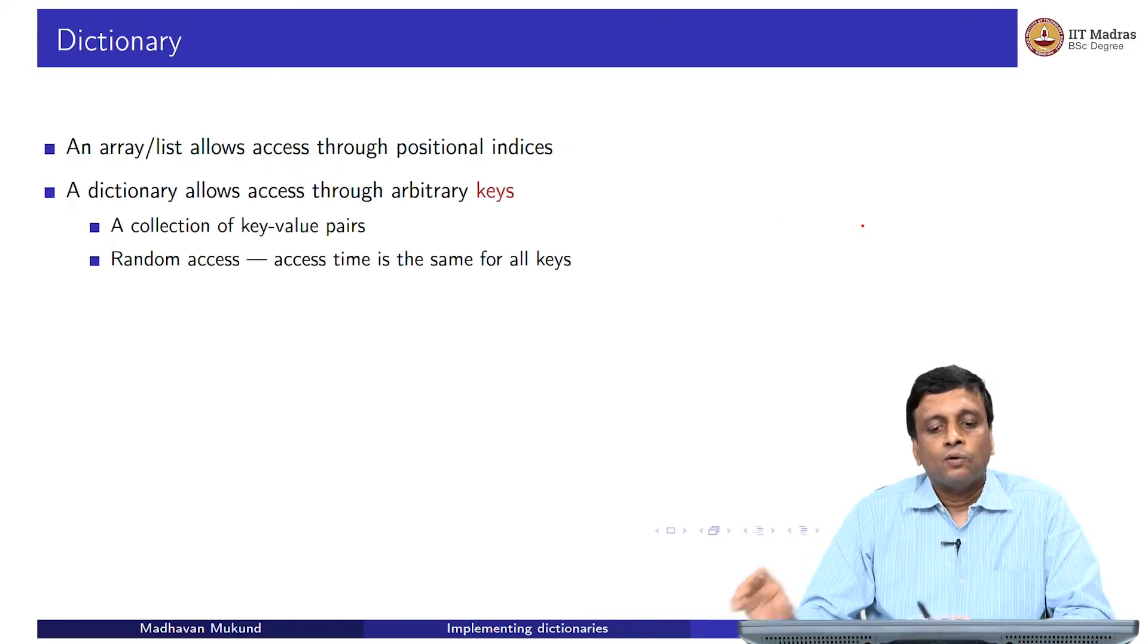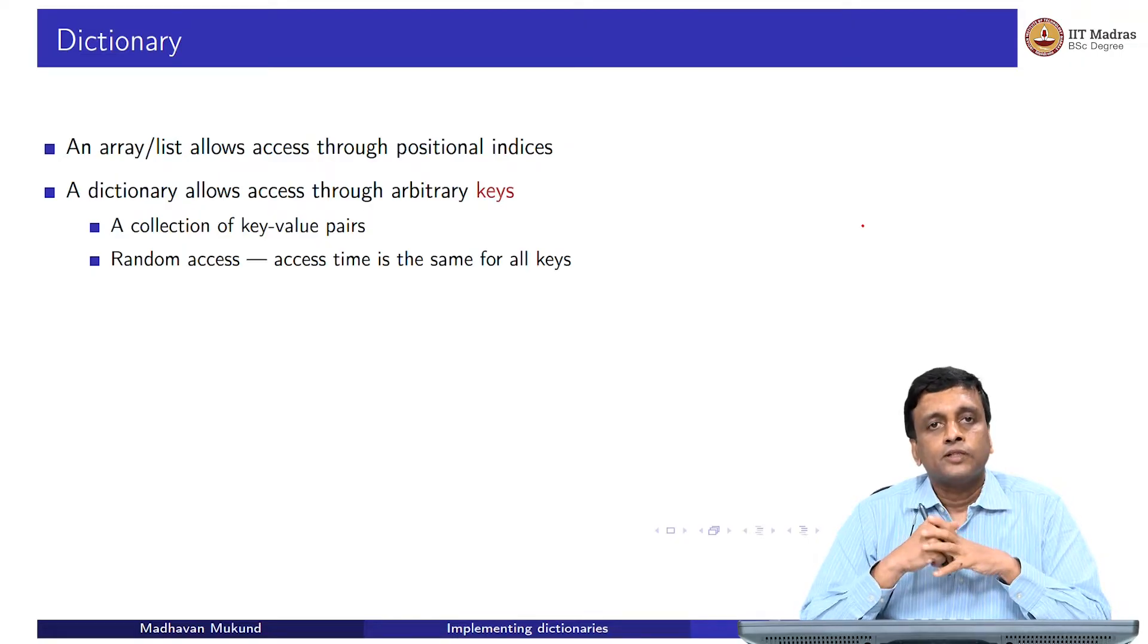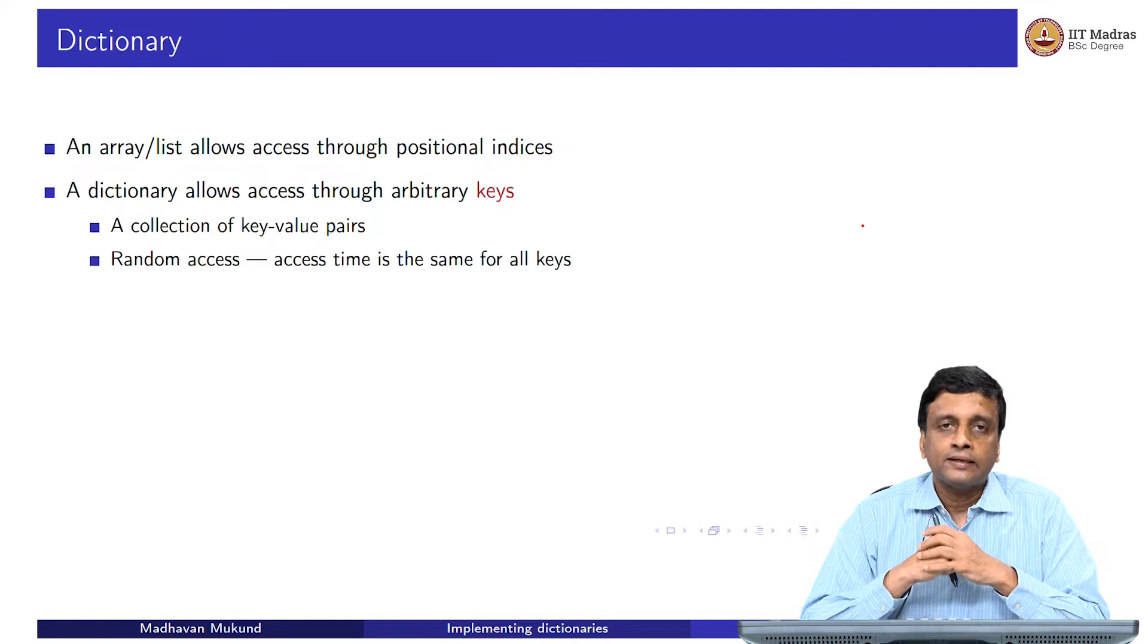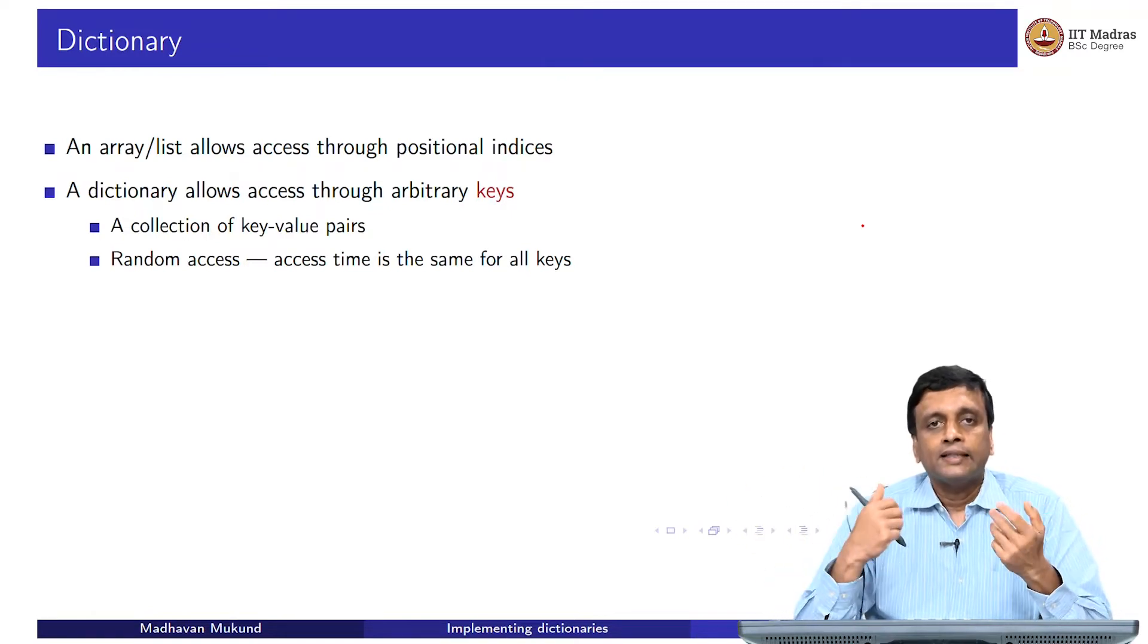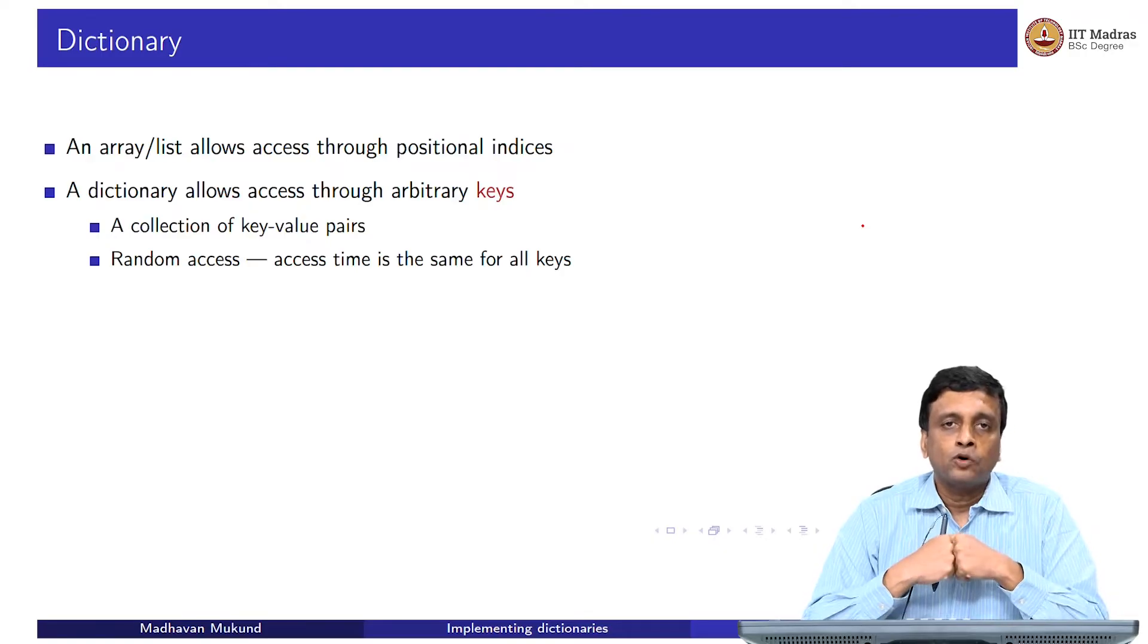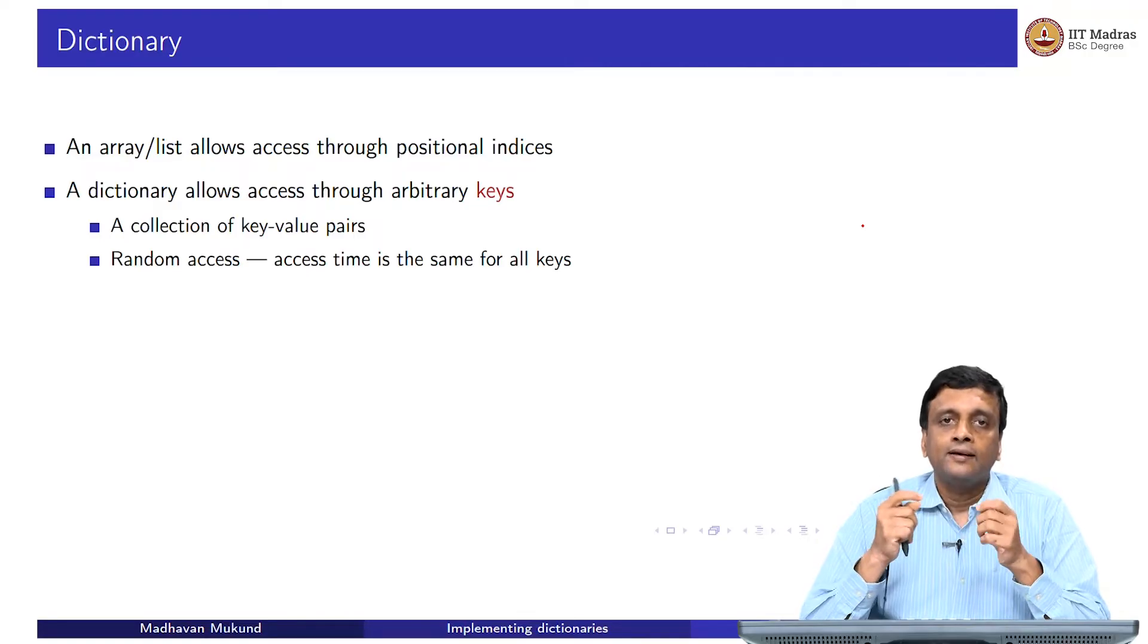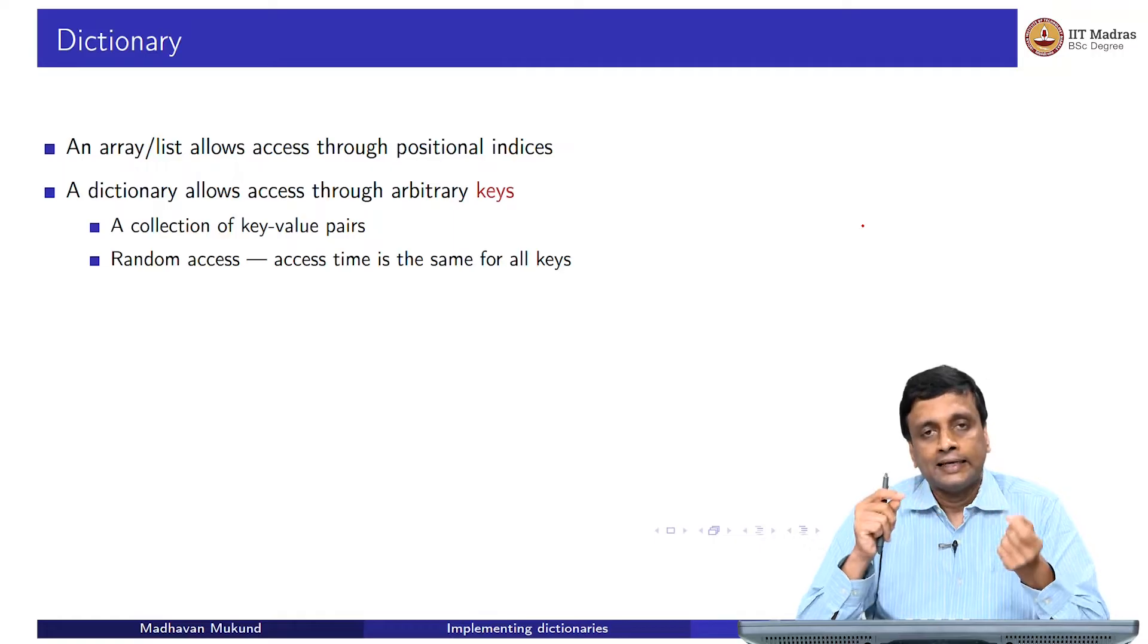In a dictionary on the other hand, what we want is to name or access an element through some abstract value. For instance, we might want to attach to a name, a string, we might want to attach a value, for example, marks. We might want to have a dictionary which has marks where the key is the name of the student or the roll number of the student and the value that we store against that name or roll number will be the marks of that student. We do not want to go through this process of first creating a mapping from all students to 0, 1, 2 to n-1 and then using an array. We would directly like to use this key to value mapping.